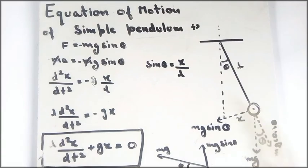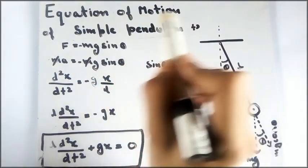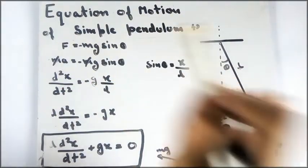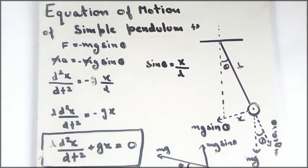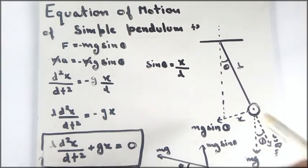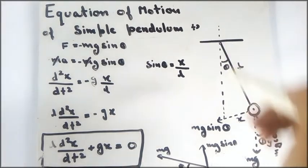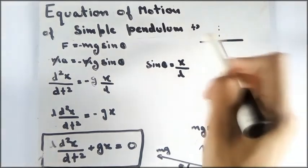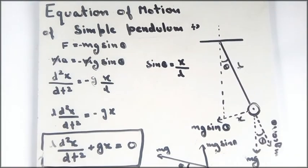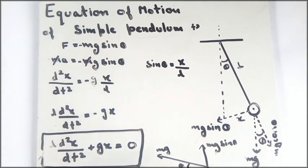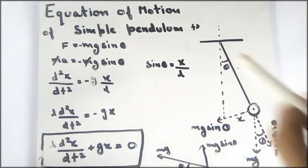This video is about the equation of motion of a simple pendulum. A simple pendulum is described as a point mass attached with a massless string to a support. There is no ideal pendulum in the real world — it is just a theoretical description.